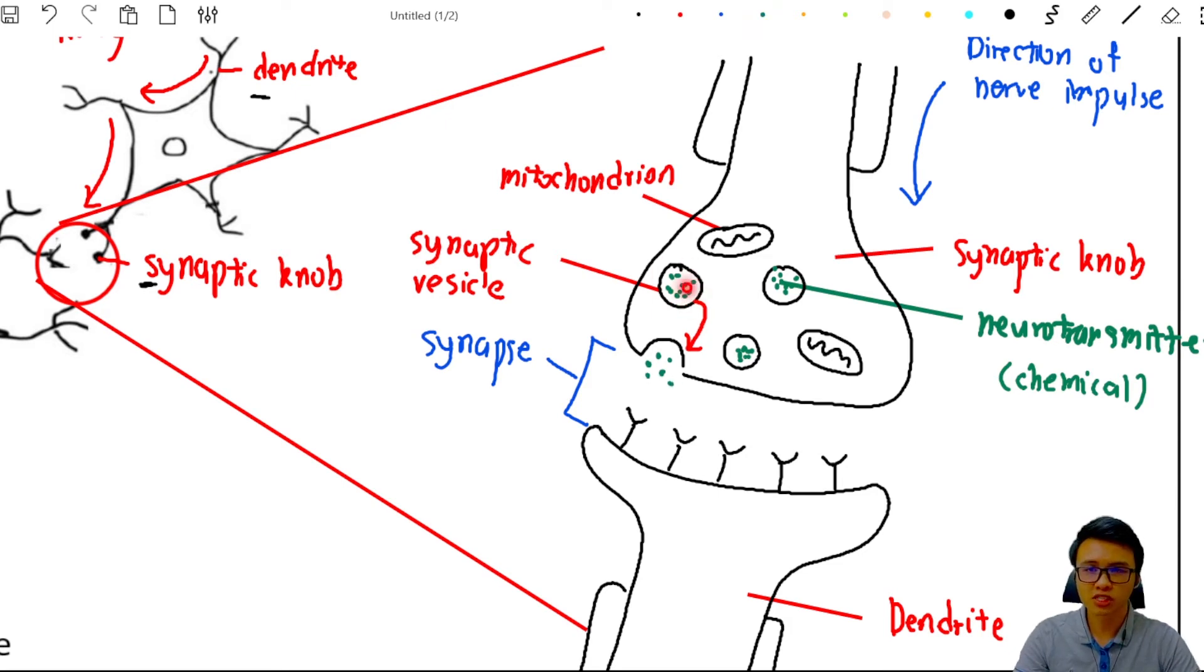For the synaptic vesicles to move from here to here, it is considered as a movement. So for any movement or for any reactions to happen, we need energy, correct? So where does the energy come from? It's actually coming from the mitochondrion. You can actually see that there are a lot of mitochondria found in these synaptic knobs because they want to produce the energy just for the transmission of the nerve impulse.